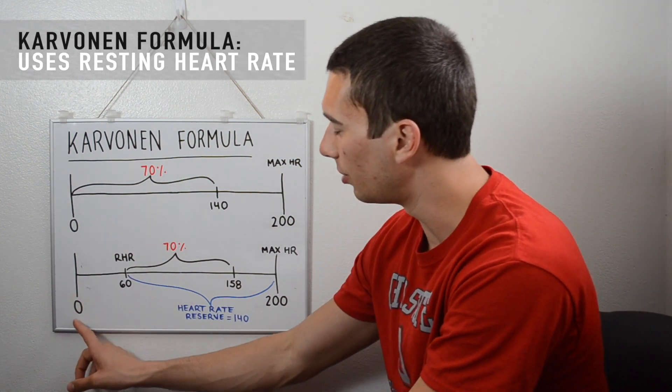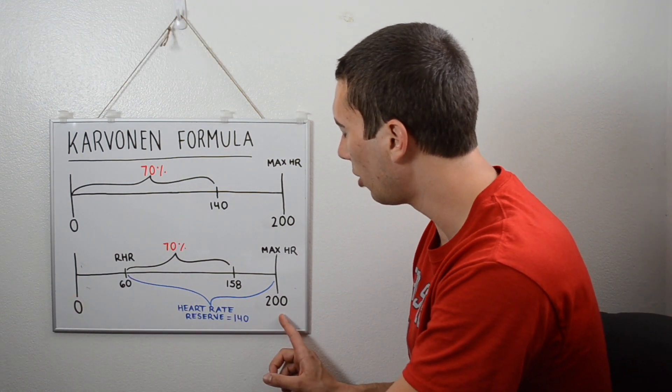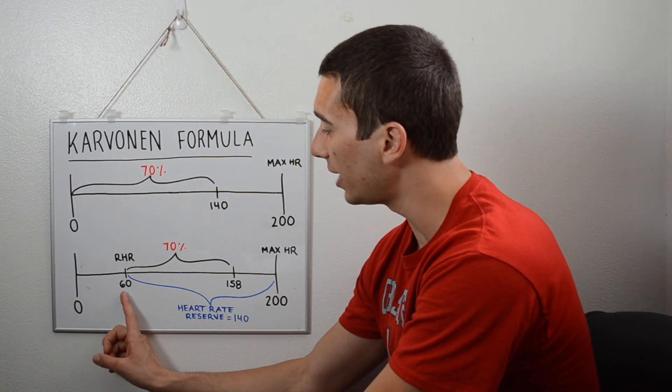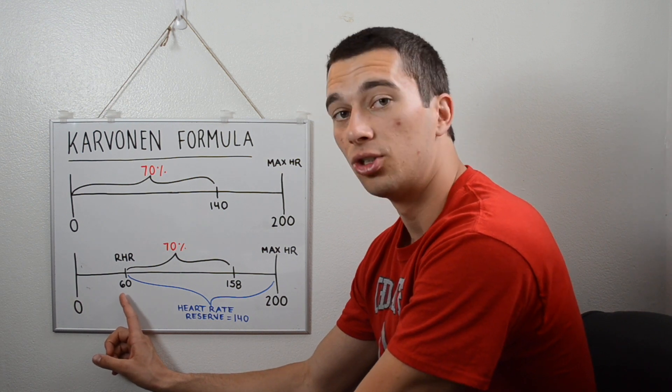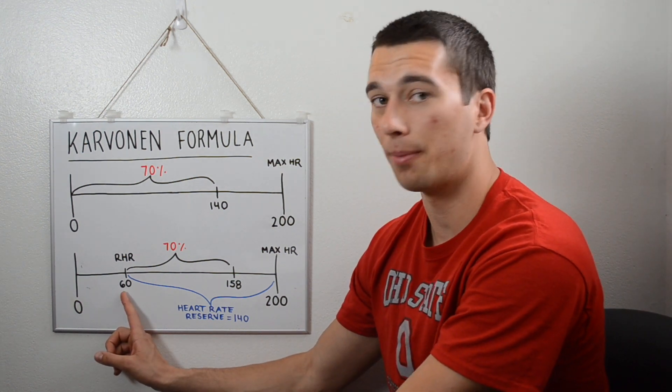So if we compare this number line down here, we have zero and then we have max heart rate, but we've also included the resting heart rate of the athlete here. So if their resting heart rate is 60 beats per minute...